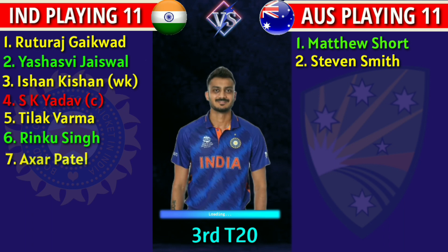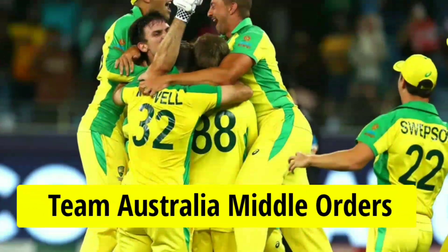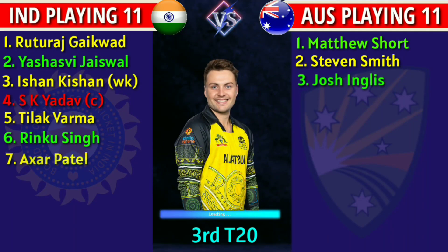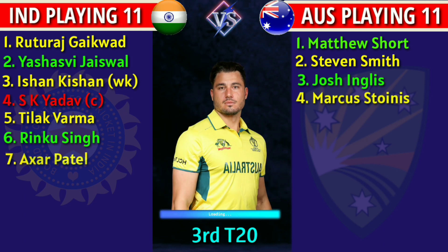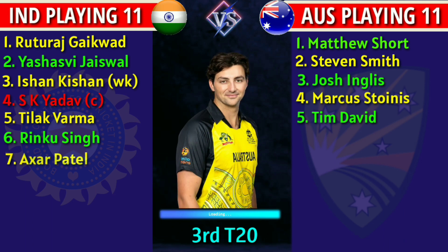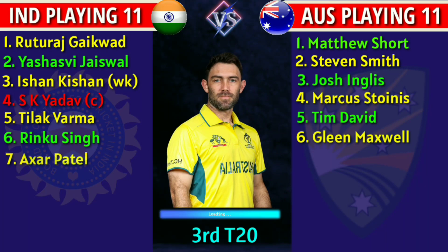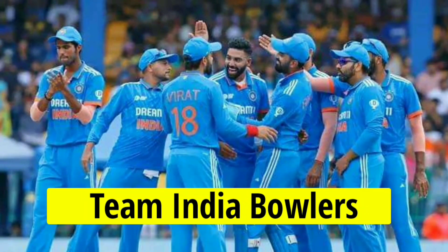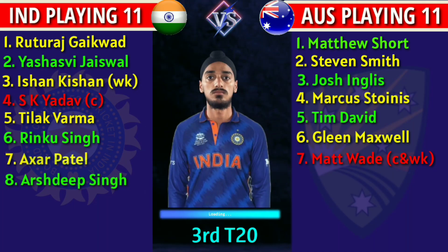7. Akshar Patel, all-rounder. Australia middle order: 3. Josh Inglis, right-handed batsman. 4. Marcus Stoinis, all-rounder. 5. Tim David, right-handed batsman. 6. Glenn Maxwell, all-rounder. 7. Matthew Wade, captain and left-handed wicketkeeper batsman.